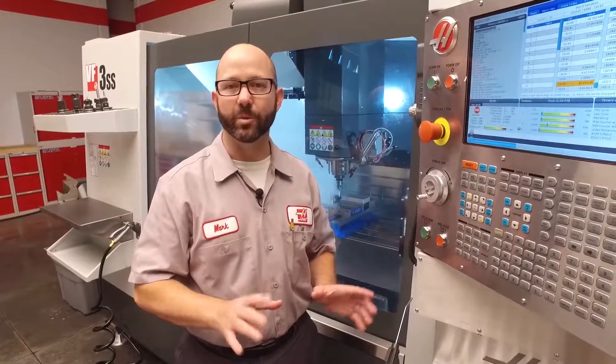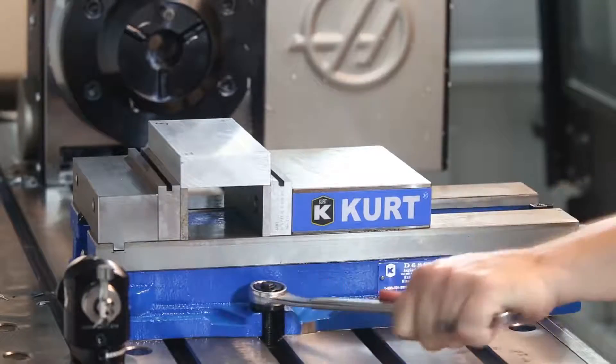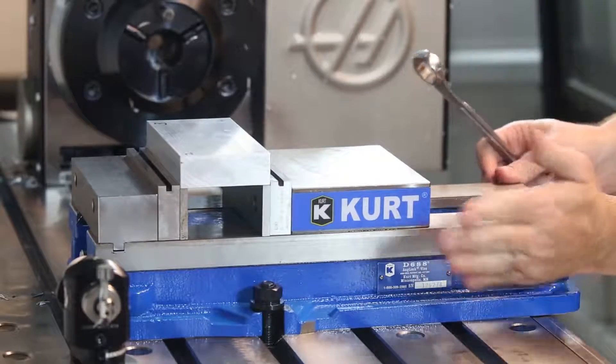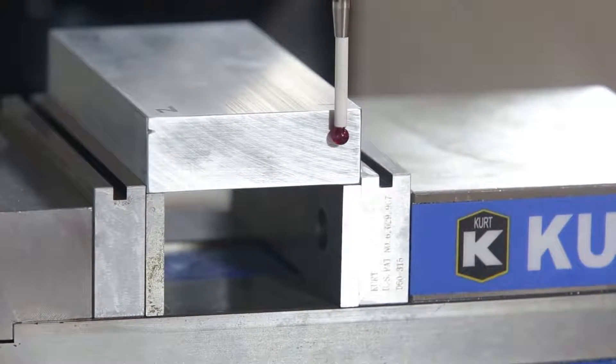So, our raw stock was pretty close to square, right? Let's go ahead and break loose the bolts on this vise. We'll kick it over at some funny angle and we'll run this exact same cycle again and see what we get.